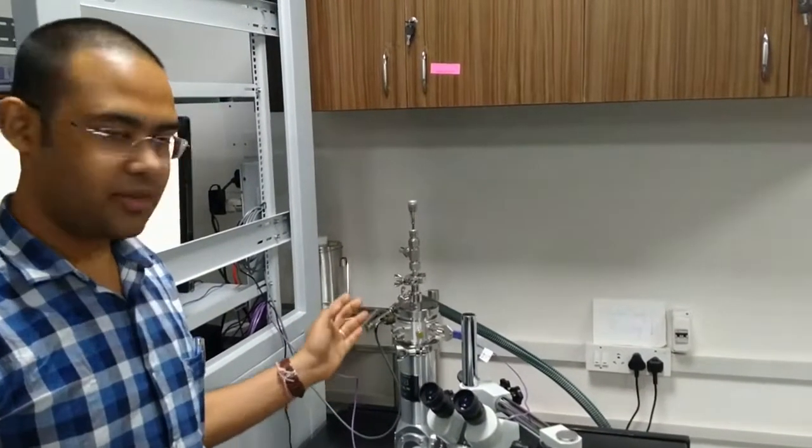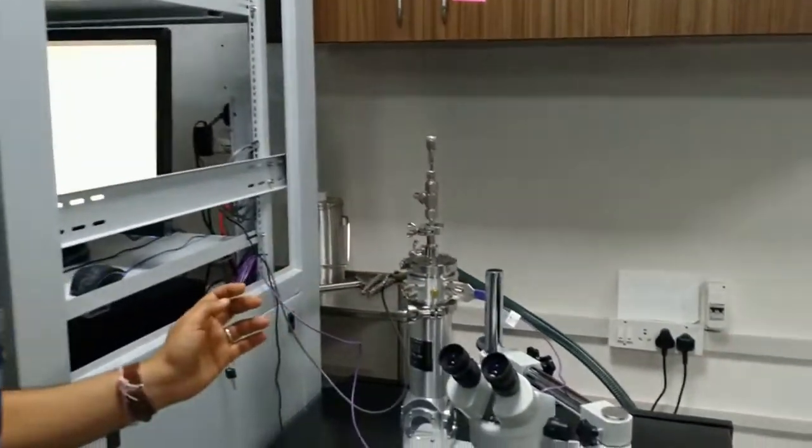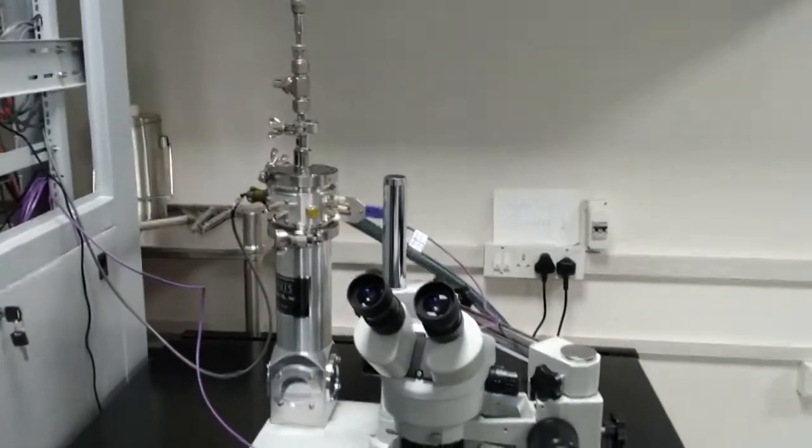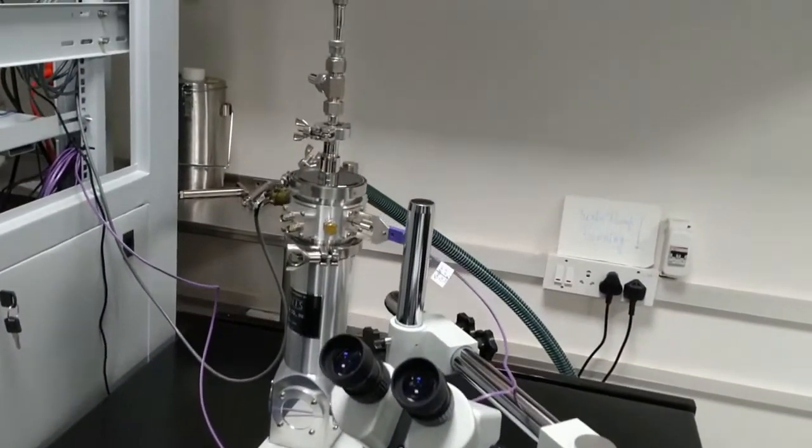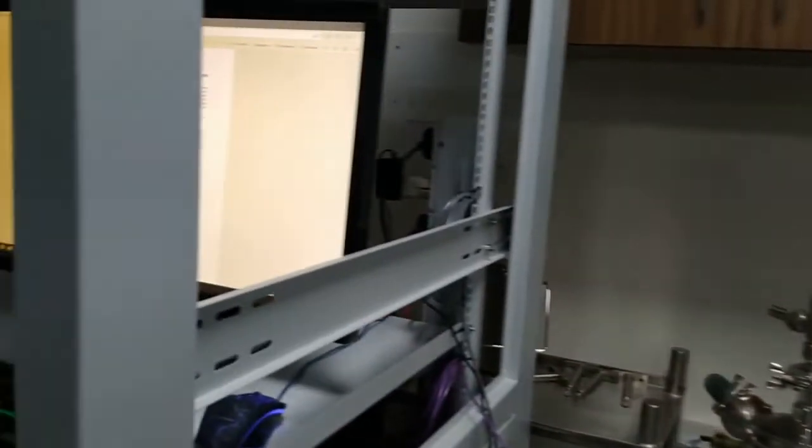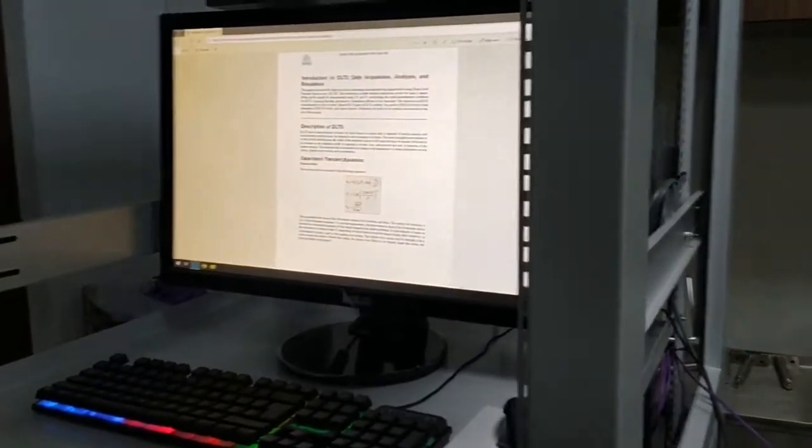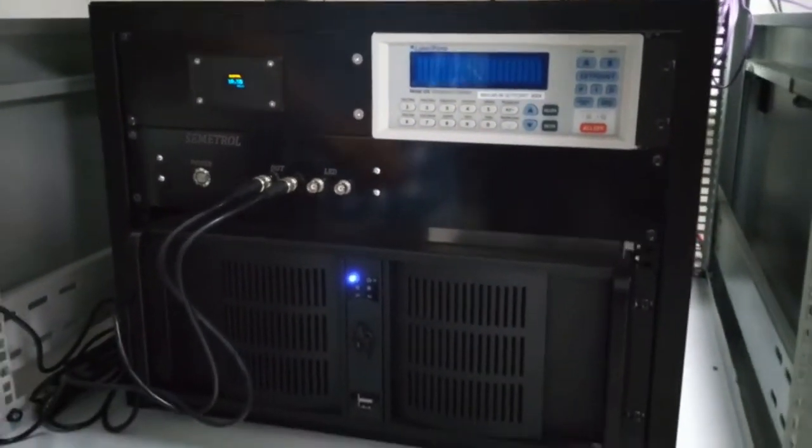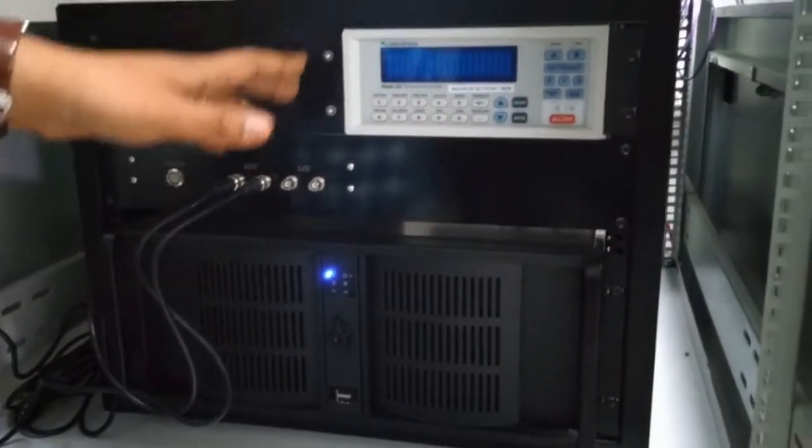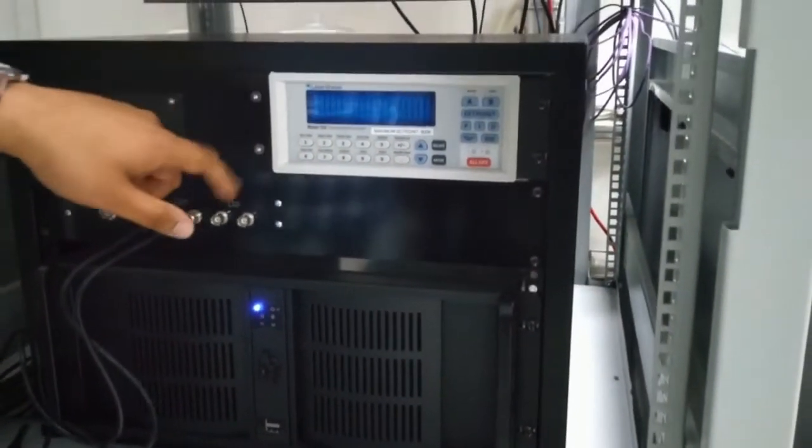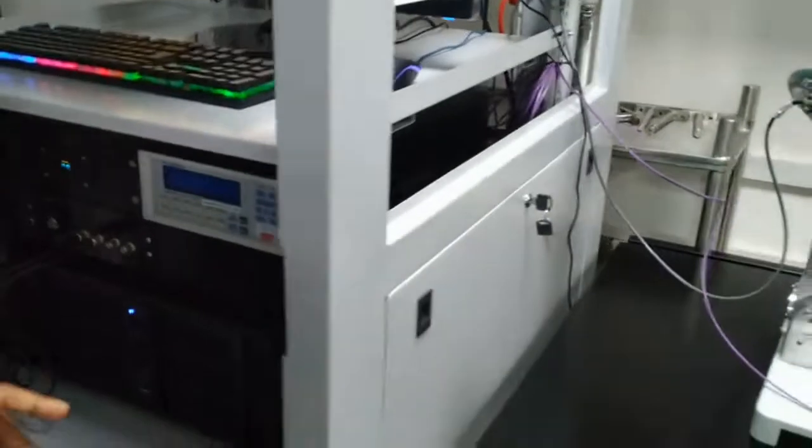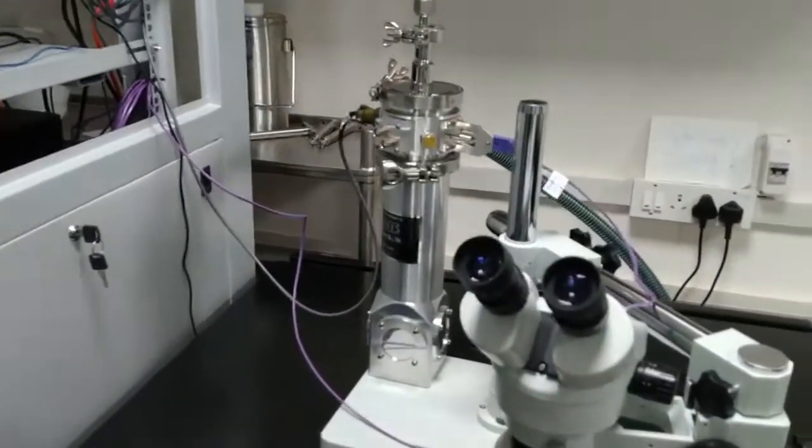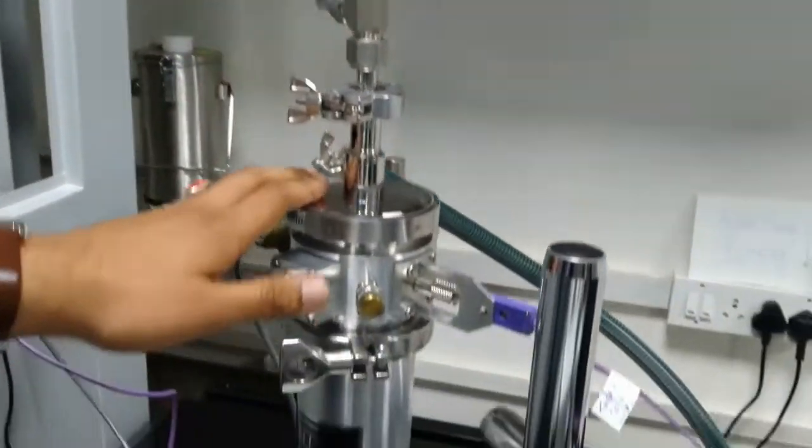This is the deep level transient spectroscopy system which is used to identify energetically deep traps which can be present in trace amounts in our semiconductors, otherwise not detected using normal IV-CV measurements. The trap detection is carried out by measuring fast capacitance and current transients in diodes and MOS capacitor-like structures under different bias conditions over a wide range of temperatures controlled using this PID controller where we can control temperature from 77 Kelvin to around 800 Kelvin. The devices are probed and loaded in a cryo chamber where vacuum of less than 10 millitorr is maintained.